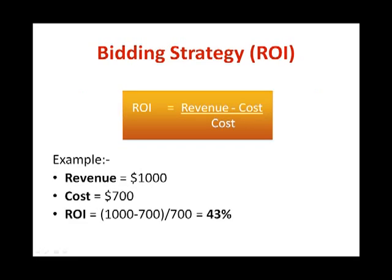One more formula to learn is how to calculate your return on investment. The formula is revenue minus cost, divided by cost. For example, if you generate $1,000 from an ad cost of $700, your profit will be $300. Your ROI will then be ($1,000 − $700) ÷ $700 = 43%. Ideally, the ROI to aim for is 100% or more — if you're not getting 100%, tweak your campaign until you achieve that.